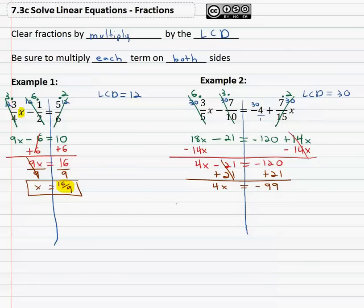We end up with 4x is equal to negative 99. And finally, to get the x alone, we divide both sides by 4, and x is equal to the fraction negative 99/4. This is the value that is represented by the variables in the equation, negative 99/4. So if there's fractions in the problem, we can get rid of the fractions by multiplying each term on both sides by the least common denominator.